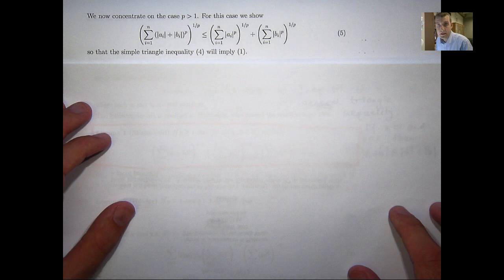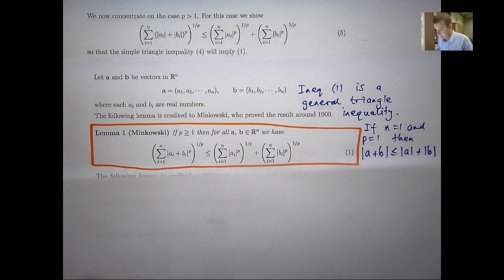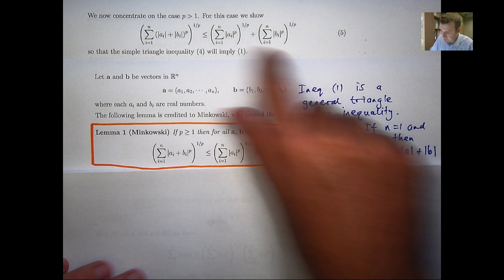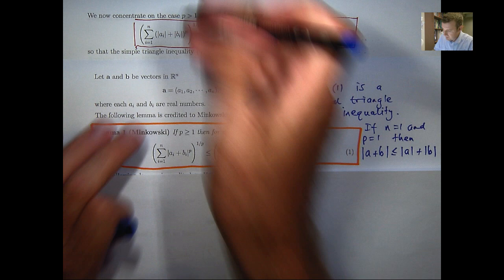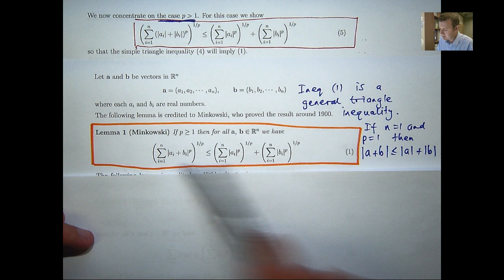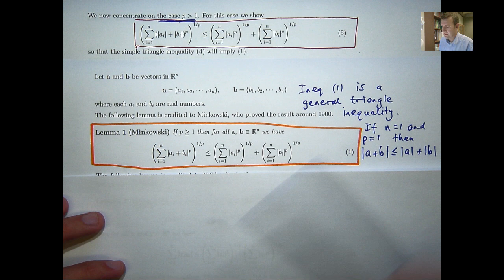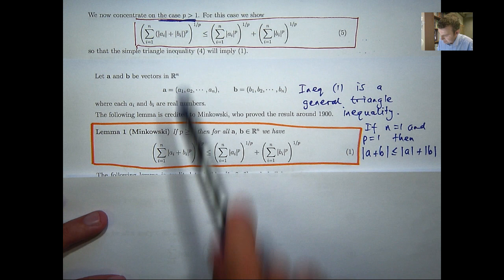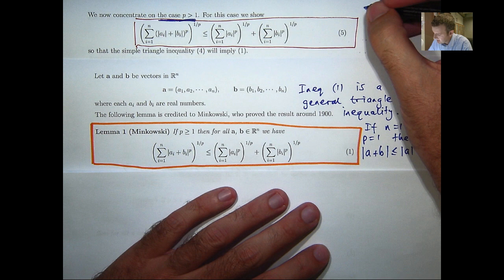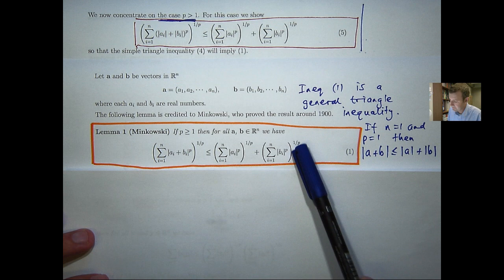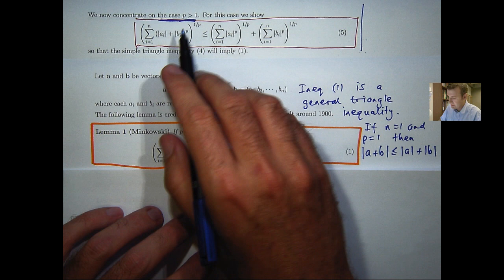Now, instead of proving inequality 1 directly, what we're going to do is actually prove this inequality 5. So we're now discussing the case where P is strictly greater than 1. Instead of directly proving this, we're going to prove this. And proving this inequality then implies that this inequality must hold. The reason is that this is always greater than or equal to this. That's just a consequence of a simple triangle rule. So what we're doing is we're showing that something that's larger than that is actually smaller than that, so this inequality must hold.